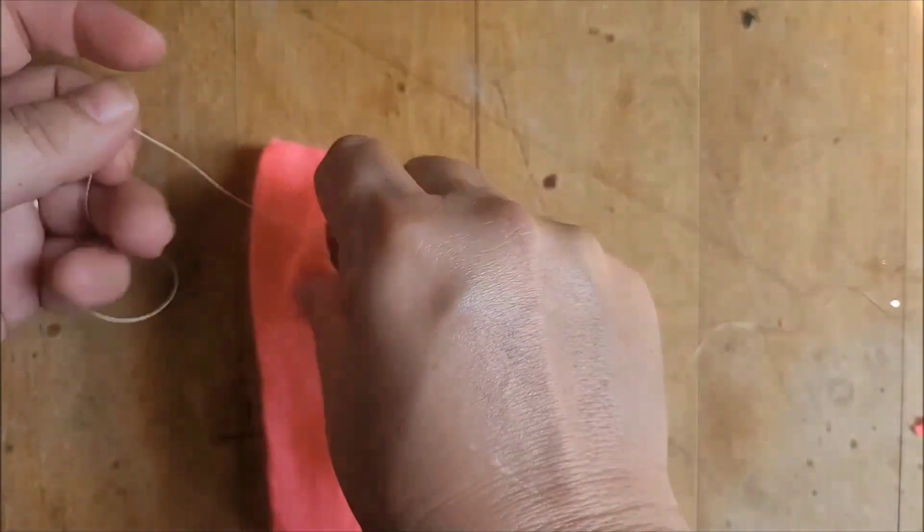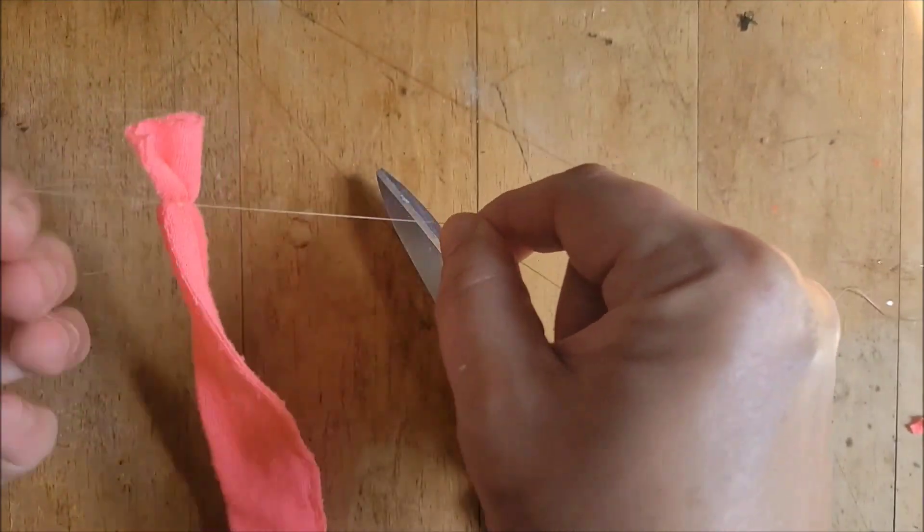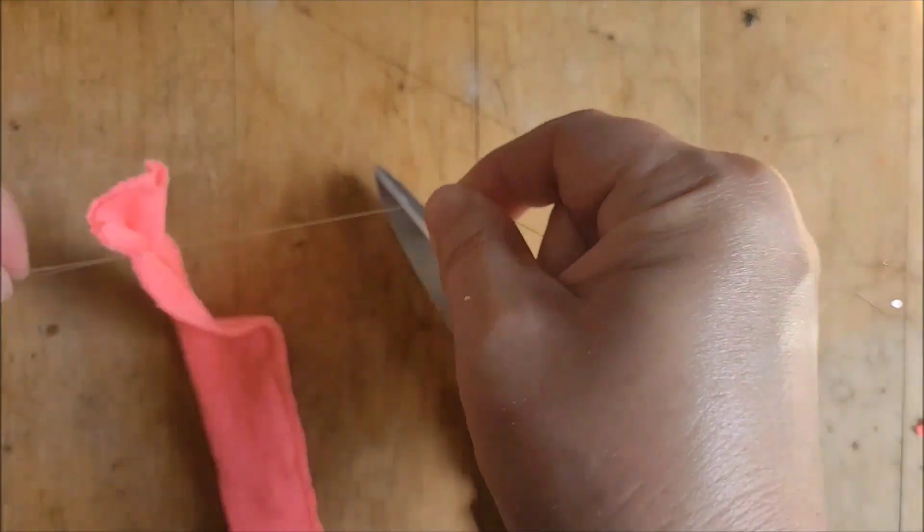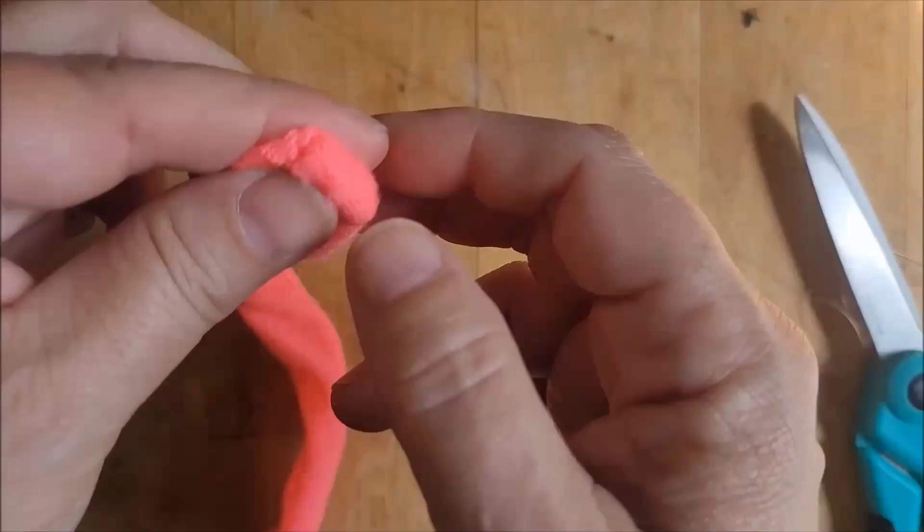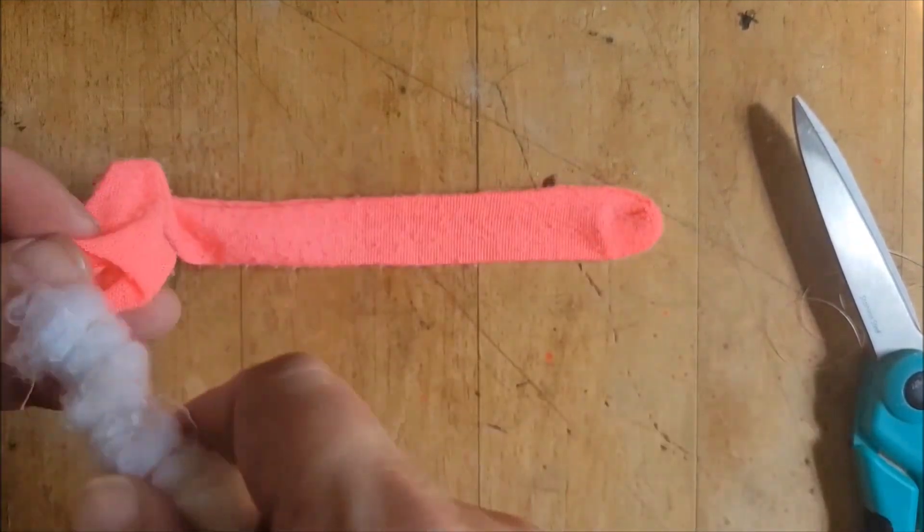You can sew one end if you like, but I'm just going to tie it off. Turn your tube inside out and then push your fuzzy stick in there.